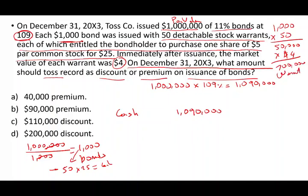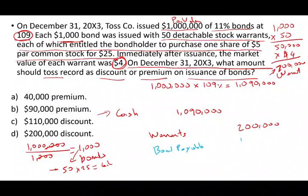We know we received $1,090,000 in cash, and we know the warrants are worth $200,000 — the fair market value is $4 for each warrant. Therefore, we credit an equity account called warrants for $200,000. As soon as we debit cash $1,090,000, we should also credit bonds payable for $1,000,000, because bonds payable has a face value of a million — the par value is a million, and you will always pay the bonds payable at a million. So we've accounted for the cash, the bond, and the warrant.